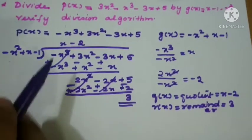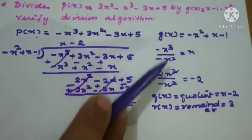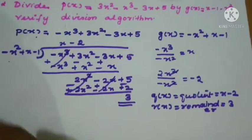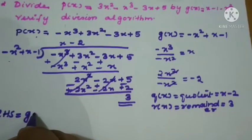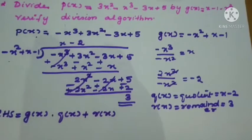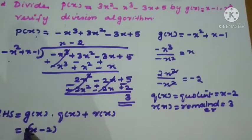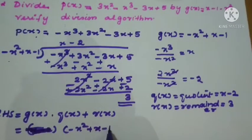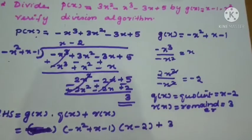We have all values: p of x, g of x, q of x, and r of x. Now verify the division algorithm. The right-hand side is g of x into q of x plus r of x. g of x equals minus x squared plus x minus 1, q of x equals x minus 2, and the remainder is plus 3. Multiplying: minus x squared times x gives minus x cubed, minus x squared times minus 2 gives plus 2x squared, plus x times x gives plus x squared.